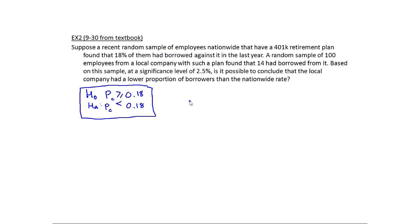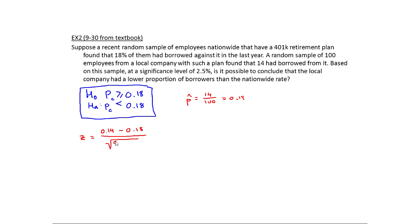Before I can compute the test statistic, I need p-hat. P-hat equals the number of successes over the total — 14 out of 100 — so it's 0.14. Now I calculate the test statistic: 0.14 minus 0.18, divided by the square root of 0.18 times 0.82, divided by the sample size of 100. When I calculate this, I get negative 1.04.